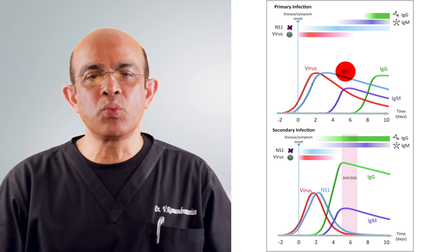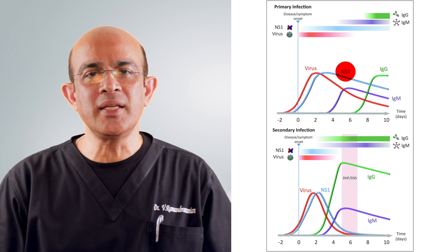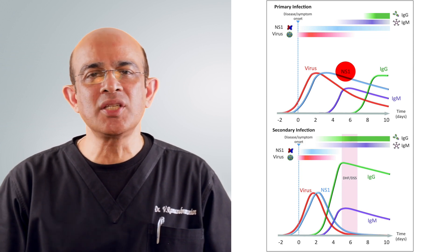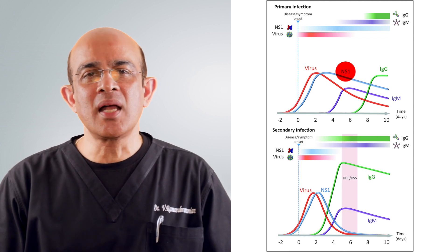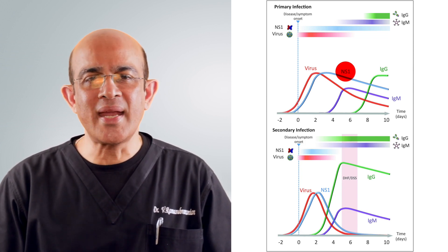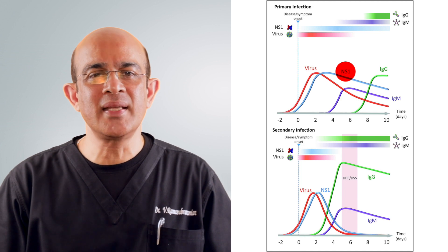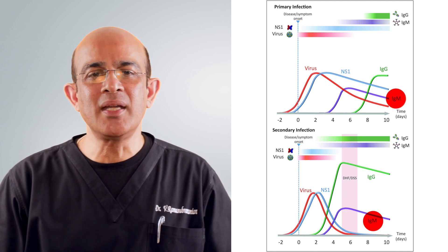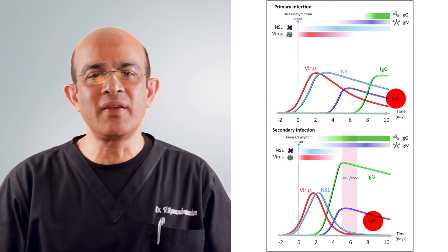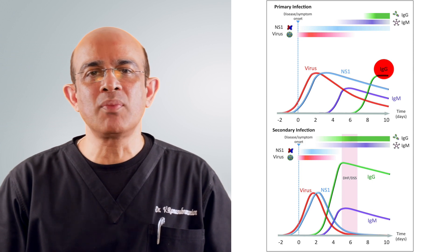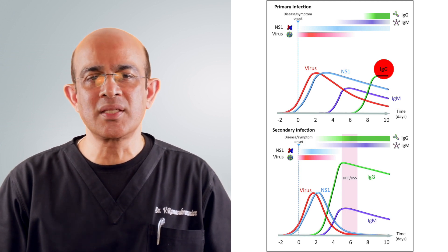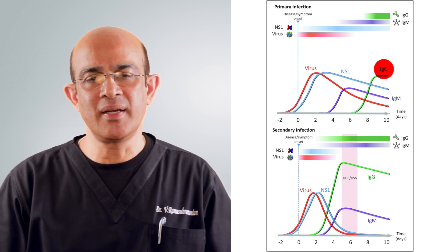The virus and the NS1 antigen are detected initially. The NS1 antigen may last up to seven to nine days during primary infection, but subsequently the NS1 antigen window period declines. IgM antibodies start appearing between three to five days and IgG antibodies may take seven to eight days to become evident. Depending on these timelines, the diagnostic tests are performed.